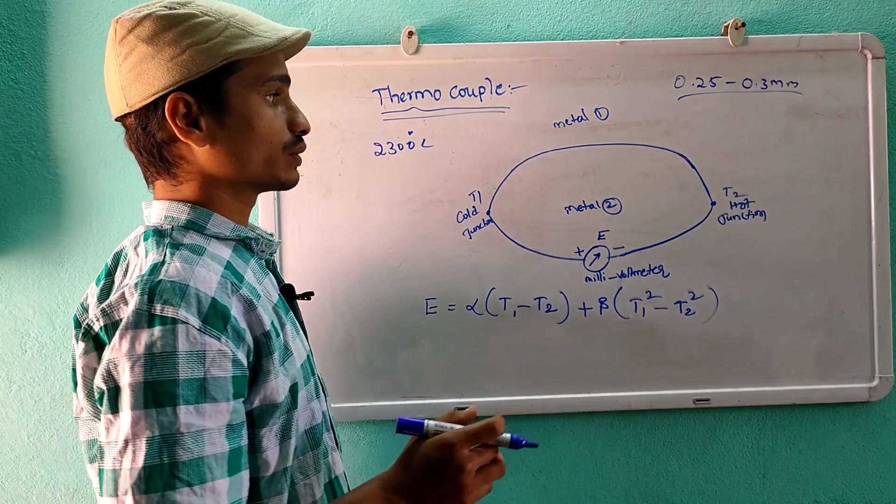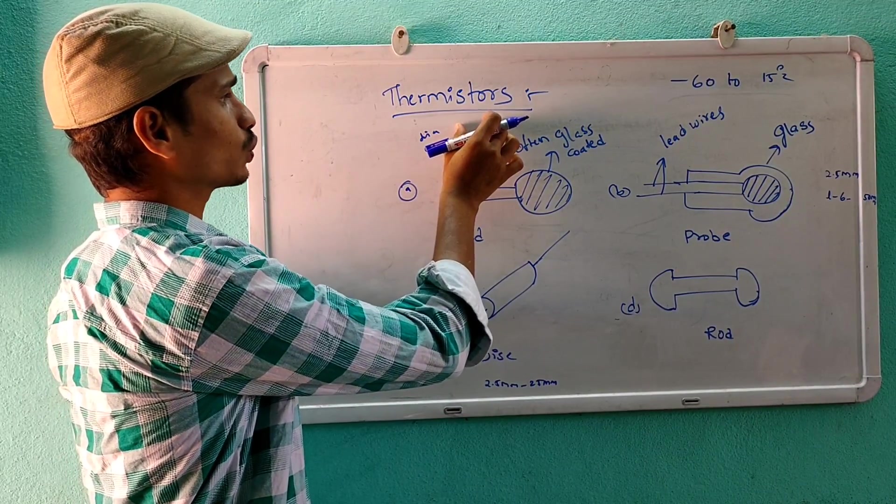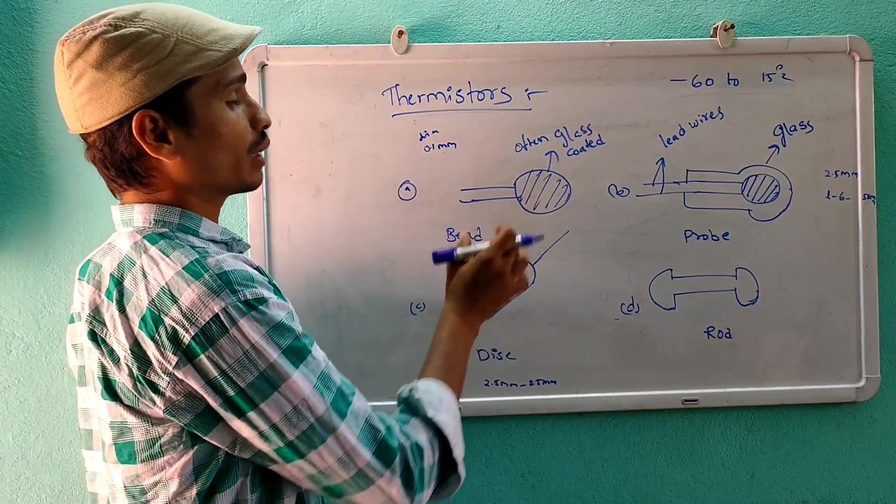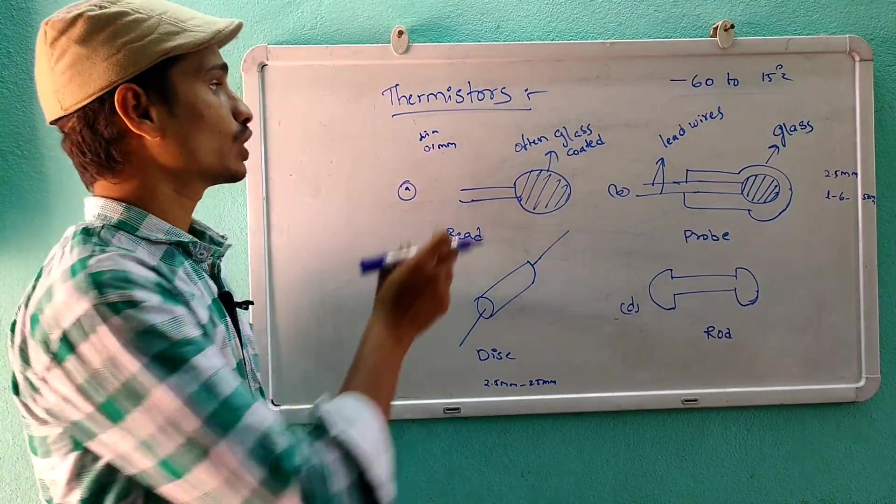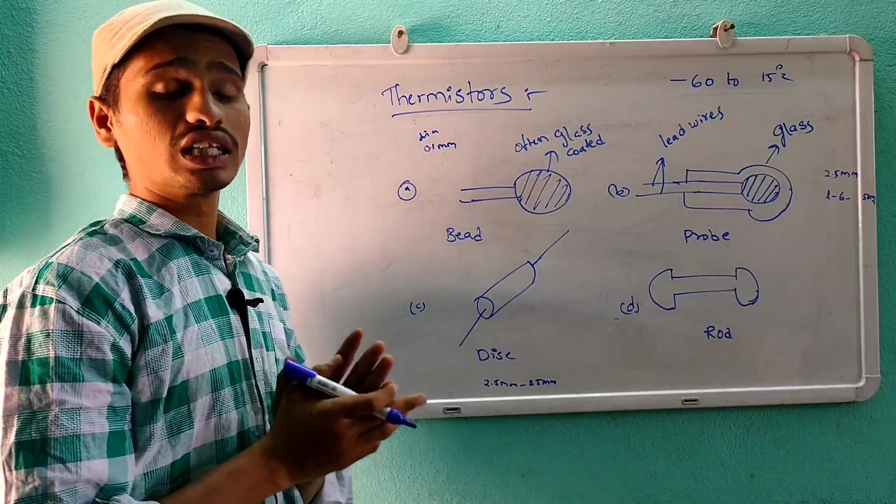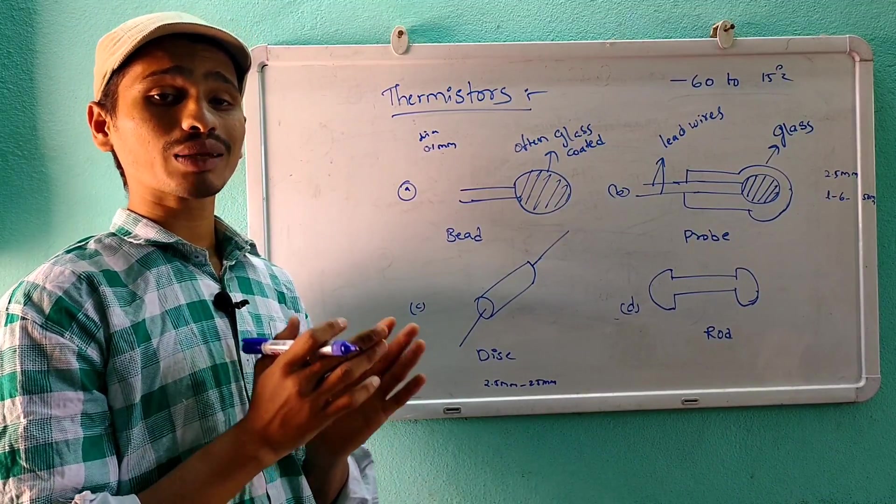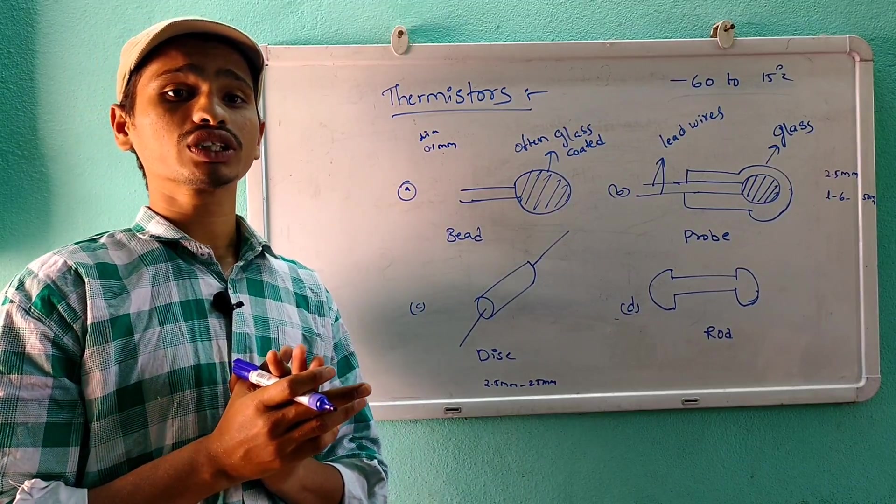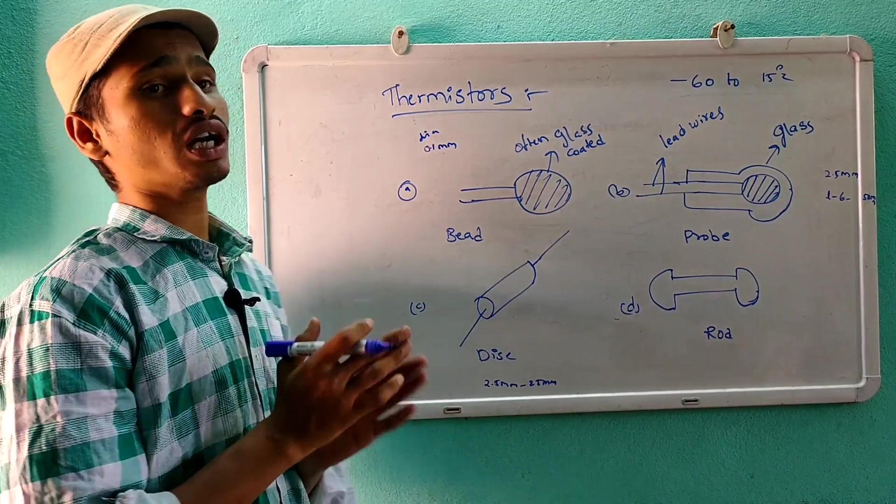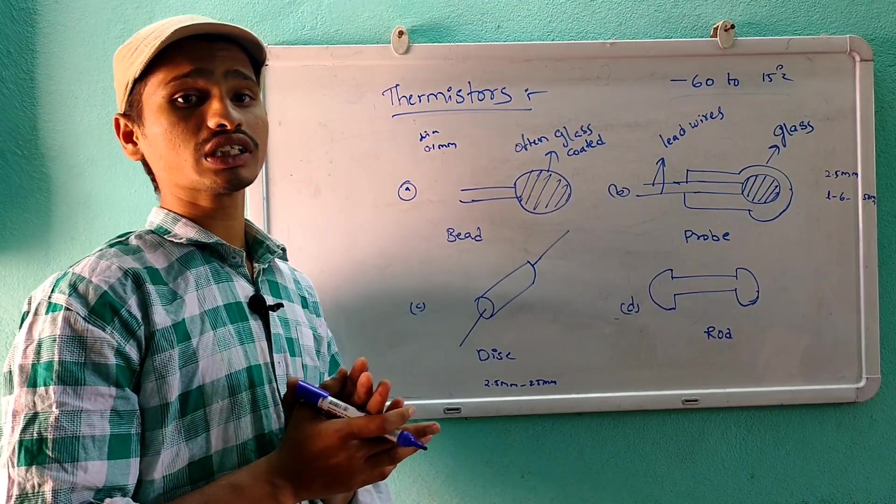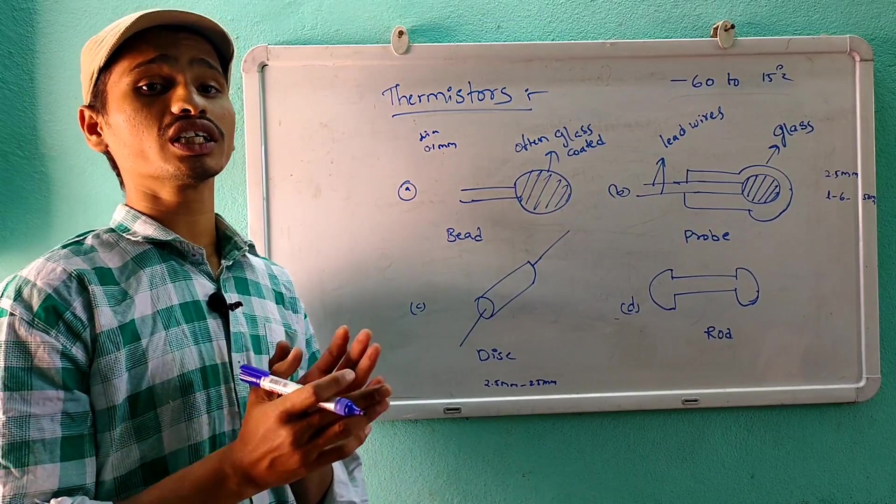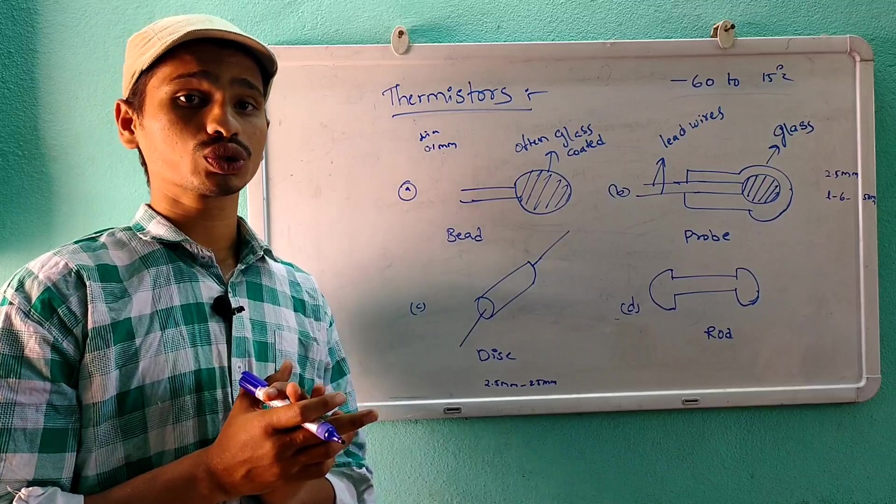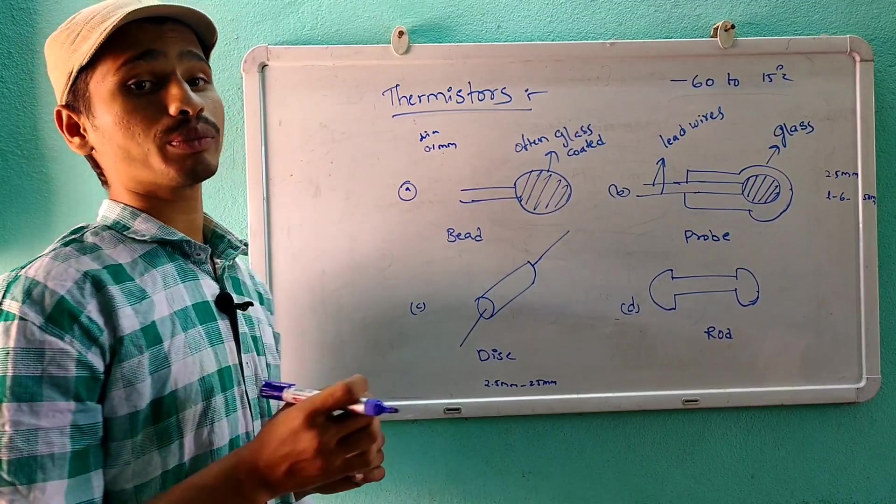Next one is thermistor. Thermistor is basically a thermal resistor which is used to measure low temperature. Normal thermocouple can measure temperature up to 2300 degree centigrade, but in case of low temperatures, we use thermistor.